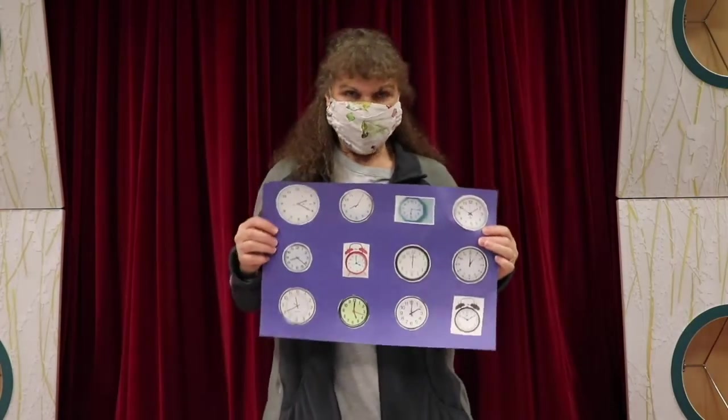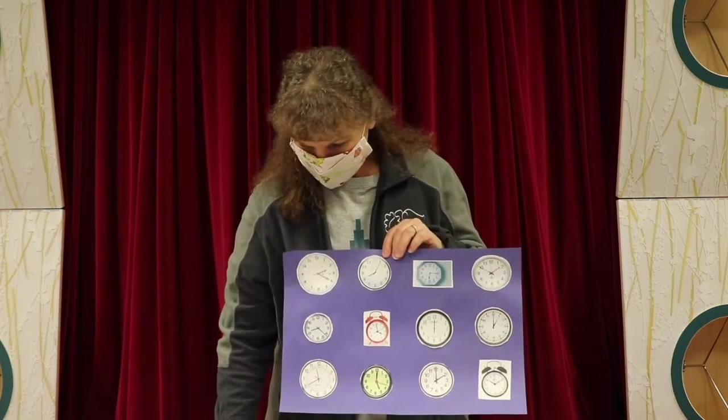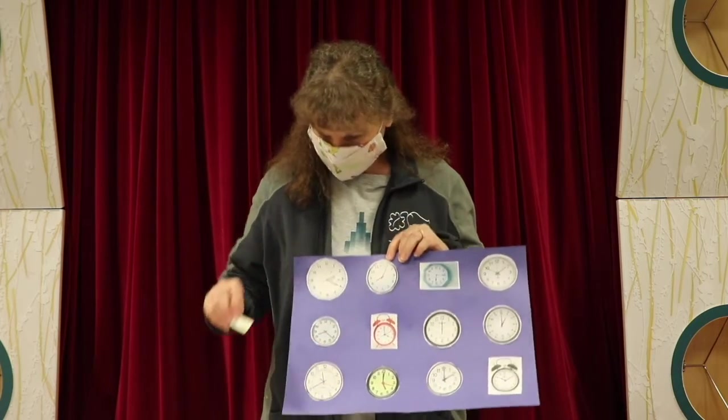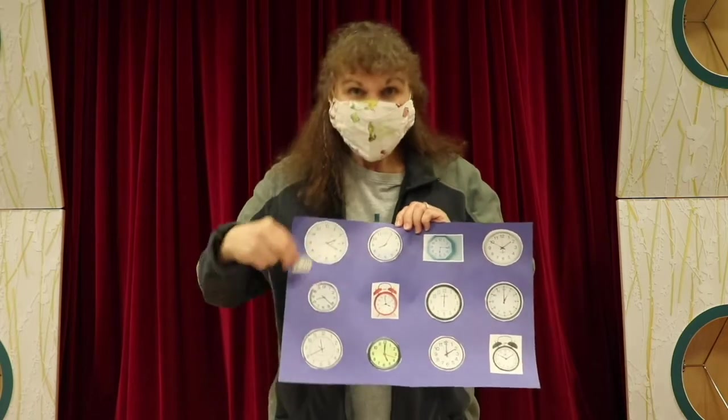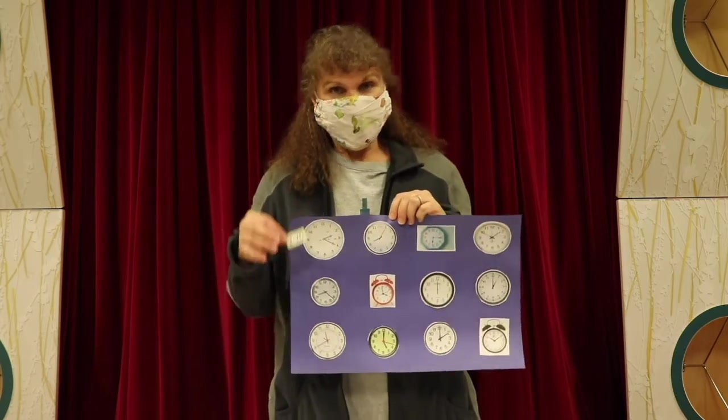For just the sake of an example, I cut mine out and put them on some construction paper and I also cut out all the different times. So what you will do is you'll grab let's say 2:20 and you'll match up the 2:20 with the actual 2:20 clock face. So you'll get to do all of them like that and have lots of fun matching up the times with the clock face time.